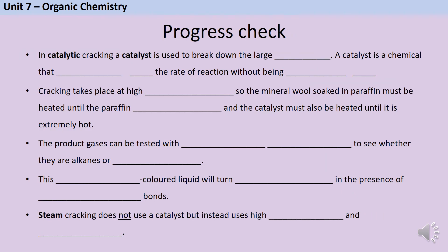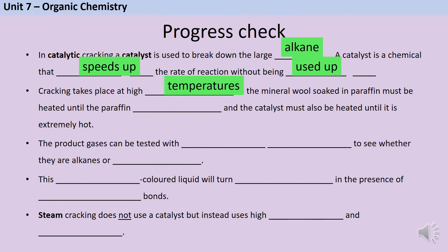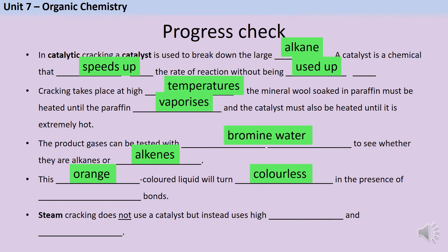Here's a final opportunity to check your understanding. In catalytic cracking a catalyst is used to break down a large alkane — a catalyst is a chemical that speeds up the rate of reaction without being used up. Cracking takes place at high temperature, so the mineral wool soaked in paraffin must be heated until the paraffin vaporizes, and the catalyst must also be heated until extremely hot. Product gases can be tested with bromine water — this orange liquid turns colourless in the presence of double bonds. Steam cracking does not use a catalyst but instead uses high temperature and steam.